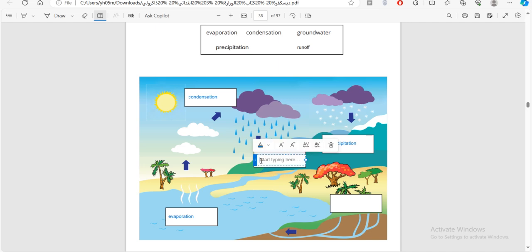And in this case, is it groundwater or runoff? It's falling from the mountain back to the body of water. So this is runoff.